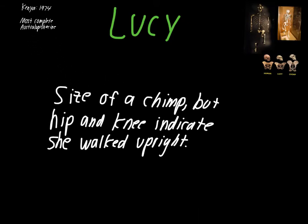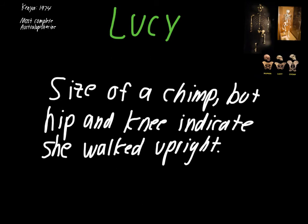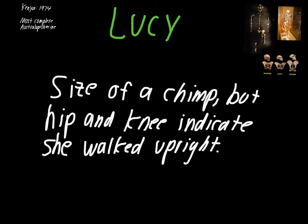As far as the size of Lucy goes, she was about the size of a chimpanzee, but the hip and knee indicate that she walked upright. That's what gets her into this hominin category with the other individuals in the Australopithecus category.